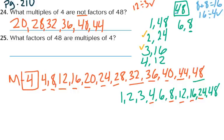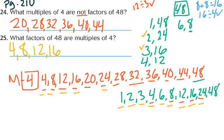Question 25: what factors of 48 are multiples of 4? Looking for the connection: 1 — not a multiple of 4; 2 — no; 3 — no; 4 — yes; 6 — no; 8 — yes; 12 — yes; 16 — yes; 24 — yes; 48 — yes. Notice that when finding multiples they're going to be numbers at least as large as the starting number or greater. When finding factors they're going to be smaller than or equal to the number — nothing greater.